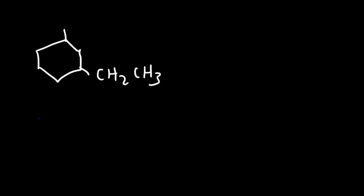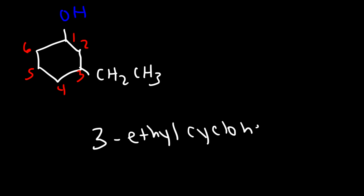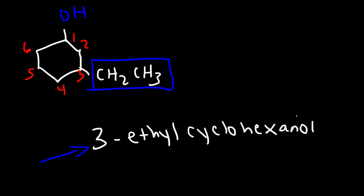What if we have two substituents on a ring? Let's say we have an ethyl group and a hydroxy group. We need to number it: one, two, three, four, five, six. We don't have to say 1-cyclohexanol, because the hydroxyl group is already part of the parent name and is automatically assigned carbon one. So the name is 3-ethylcyclohexanol. We need to specify the three on the ethyl group because it could be on carbon two or four — we must provide enough information to draw the specific molecule.